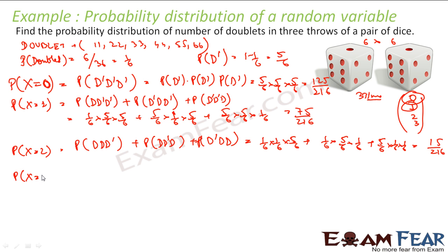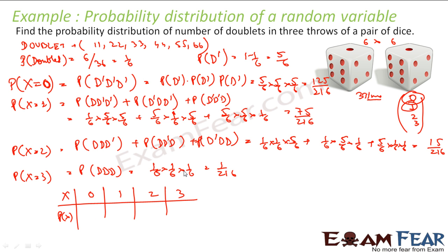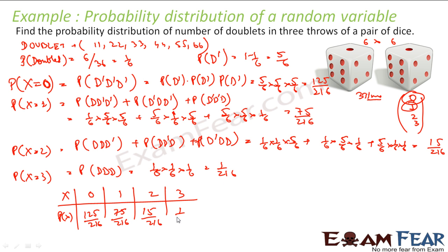Similarly, the probability of getting three doublets is 1/6 × 1/6 × 1/6, which is 1/216. So the probability distribution has values of x as 0, 1, 2, and 3, with probabilities 125/216, 75/216, 15/216, and 1/216 respectively. Adding them: 125 + 75 + 15 + 1 = 216, so the sum is 216/216 = 1.